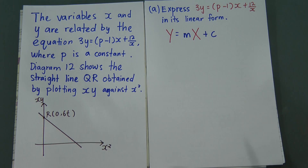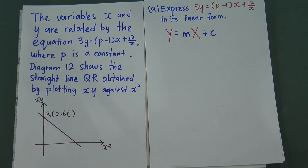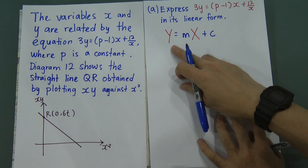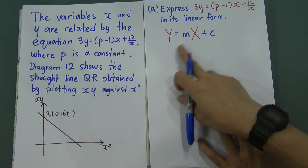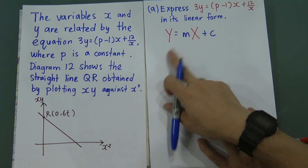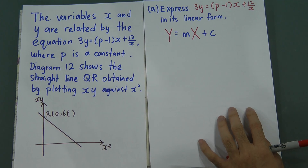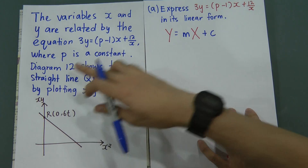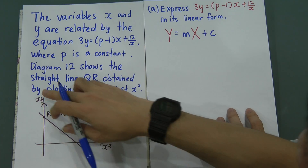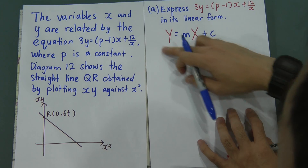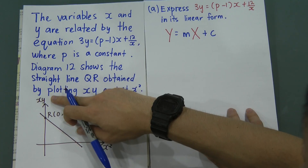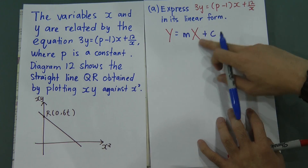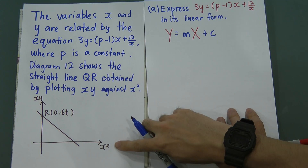Why do Y and X need to be in capital form? Because in this chapter, x and y can be substituted into any form. Looking at the axes: the y-axis is xy, meaning capital Y must become xy. The x-axis is x², meaning capital X must become x².